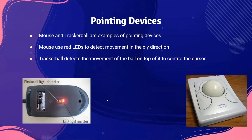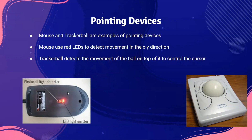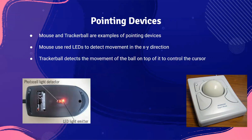Pointing devices allow a user to click and interact with software. The two major examples are the mouse and the tracker ball. A mouse uses an LED to detect movement in the x and y direction, sending that information to the computer to move the cursor. However, mice require a specific surface like a mouse mat. Tracker balls, on the other hand, don't need a special surface — you simply rotate the ball on top to move the cursor.